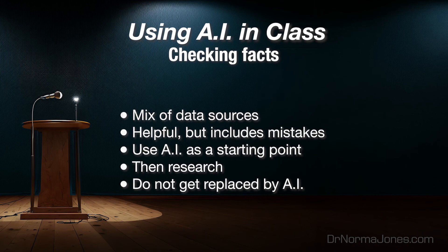Checking facts. Next, AI generates responses using a mix of data sources. The problem is that some of those data sources are inaccurate. AI might not be able to tell the difference between good and bad information. Consider AI as a helpful, but not well-informed friend. This friend wants to help, but cannot tell if they make a mistake. So you should use the AI-generated responses as a starting point, and then carefully research to ensure that what you submit in class is accurate. Otherwise, you will be submitting bad work that will negatively impact your grade and credibility.